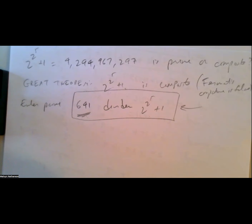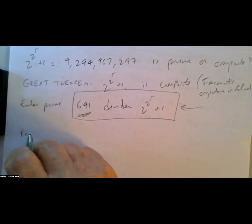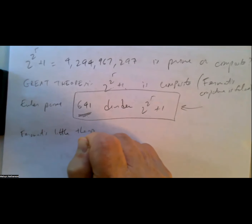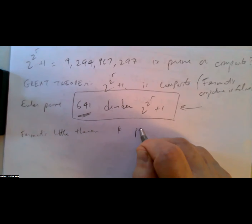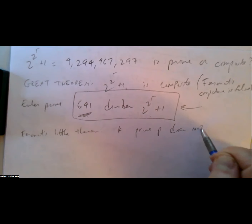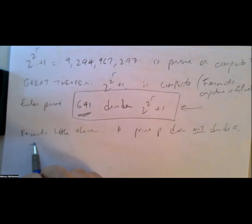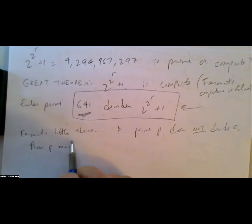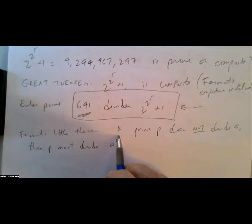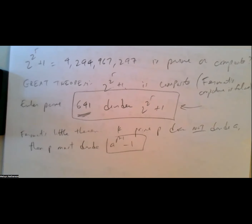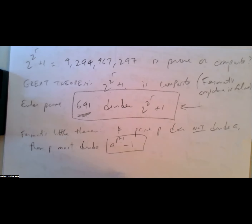One step in the proof is what is sometimes called Fermat's Little Theorem, which says: if a prime p does not divide an integer a, then p must divide a^(p−1) − 1. So if p does not divide a, then it absolutely will divide a to the p minus first power minus one.